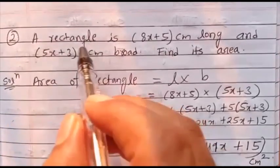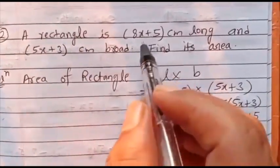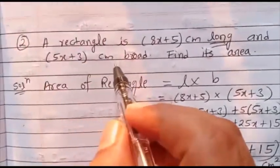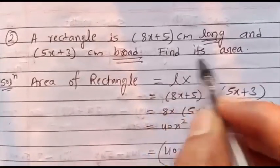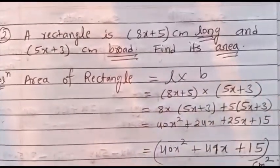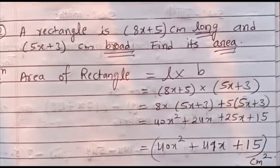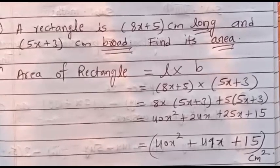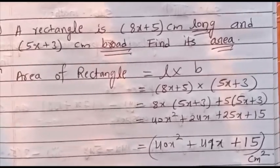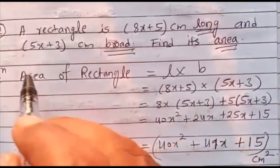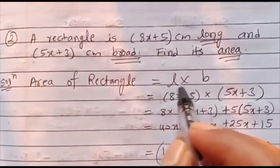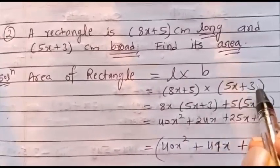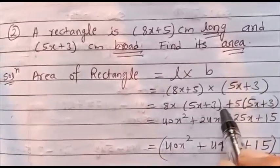Second question: a rectangle is (8x plus 5) cm long — long means length — and (5x plus 3) cm broad — broad means breadth. Find the area. The formula for area of a rectangle is length into breadth. So area equals (8x plus 5) into (5x plus 3).